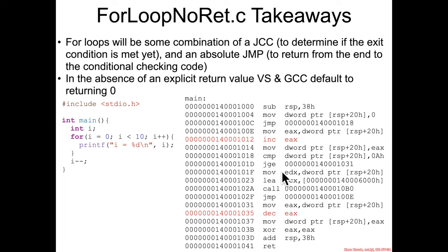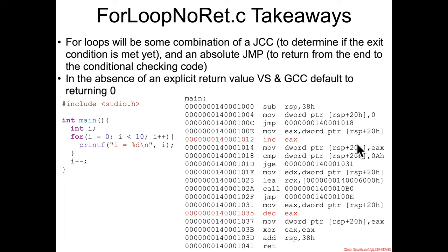From our previous heuristic about how to interpret compares and conditional jumps, we can see it's comparing some memory location — that's probably i — to the value 10, which is hex A. So is i greater than or equal to 10? If so, take the jump down to 31. That's the exit condition — if i is greater than or equal to 10, it exits the for loop.